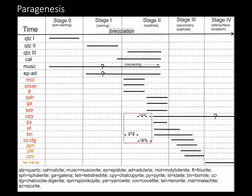Considering mineralogical and textural evidence, we constructed a paragenesis divided into five stages. Stage 0: the pre-veining stage with first-generation quartz. Stage 1: veining, with second-generation quartz, muscovite, epidote, and adularia. Stage 2: the major sulfide stage, with chalcopyrite, idaite, bornite, chalcocite, digenite, sphalerite, galena, as well as molybdenite, silver, and fluorite. Stage 3: the secondary sulfide stage, with spionkopite, yarrowite, and covellite. Stage 4: the late surface oxidation stage with tennantite, malachite, and azurite. It is important to note that the mineral sequence in paragenesis for the core is distinct, with bornite followed by chalcopyrite and chalcocite-digenite.